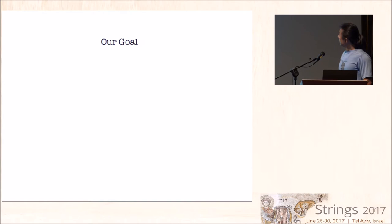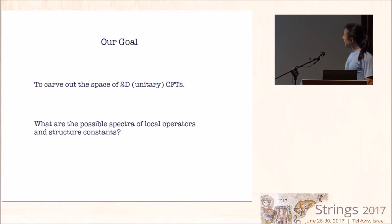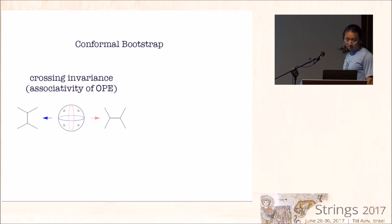Our goal is simply to try to carve out the space of 2D unitary CFTs. I think there's no need for explaining why that's important. We'd like to understand what are the possible spectra of local operators and structure constants in the 2D CFT using conformal bootstrap.